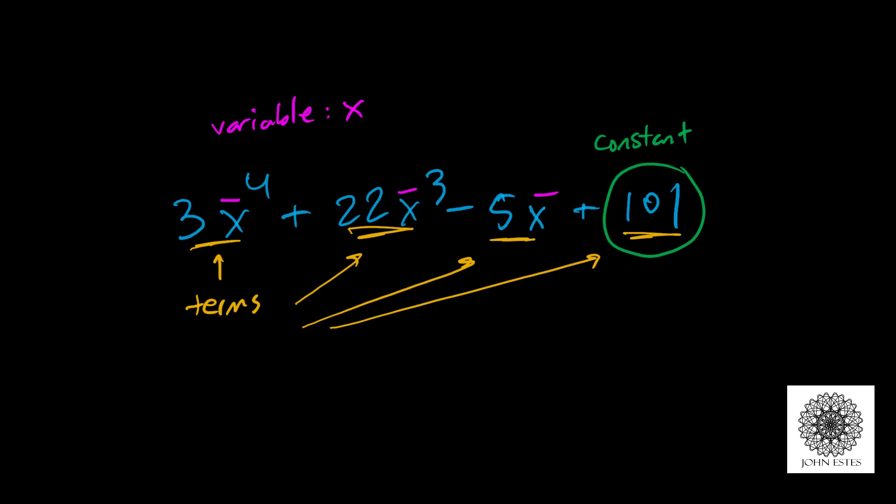Now in each of these terms that has a variable, there is a number being multiplied in front of that variable. Those numbers are called my coefficients. So my coefficients here are the 3, 22, and negative 5.